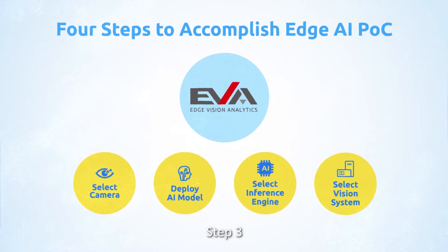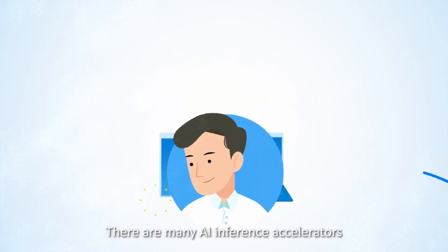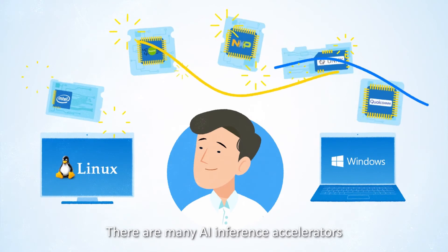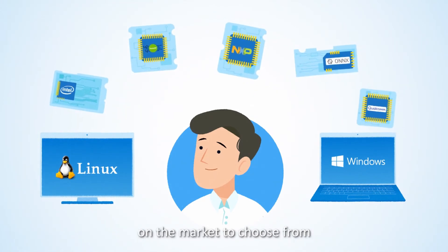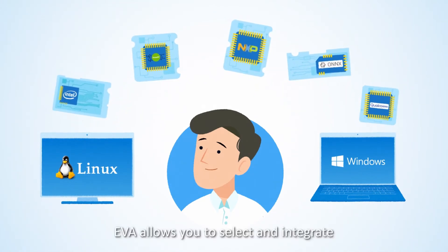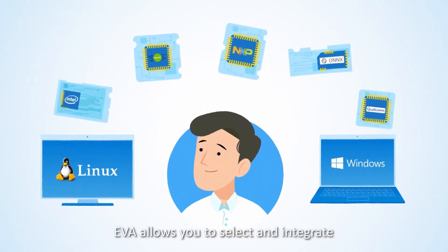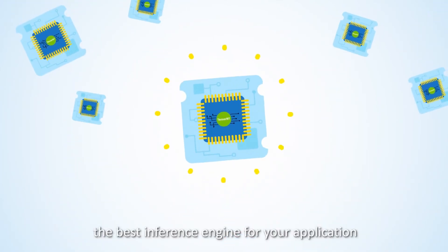Step 3: Select an AI inference engine. There are many AI inference accelerators on the market to choose from. EVA allows you to select and integrate the best inference engine for your application.